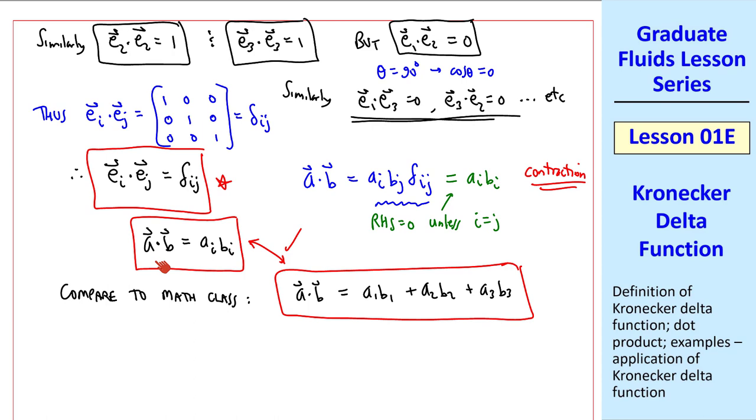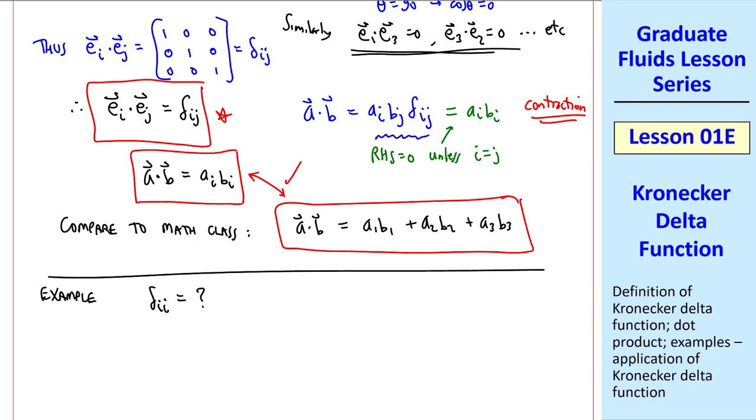Let's do an example. What is delta i i? Well, we're summing over the i's. So this is delta 1,1 plus delta 2,2 plus delta 3,3, which is 1 plus 1 plus 1, or 3. The answer is 3.